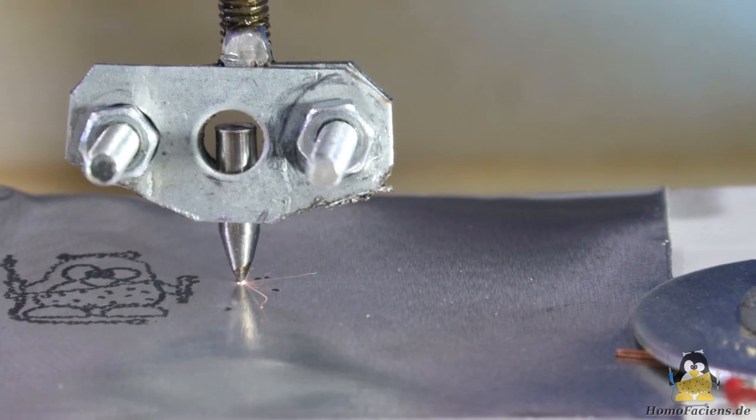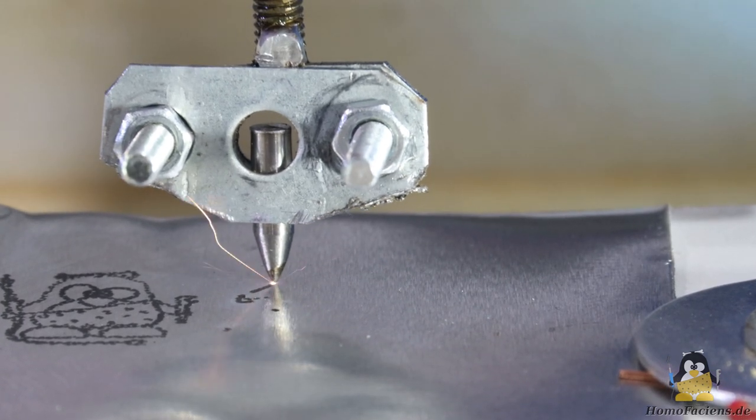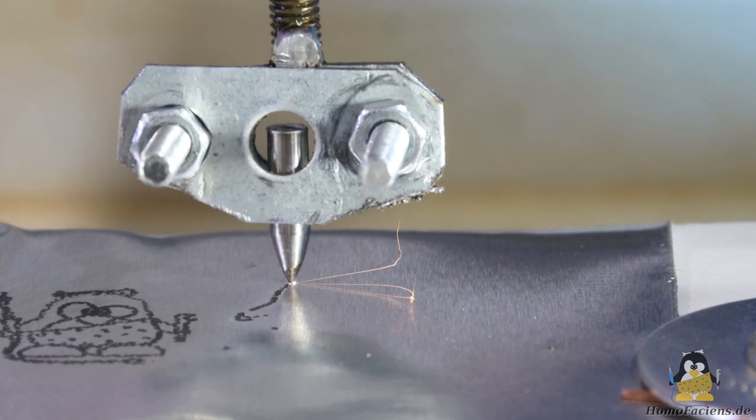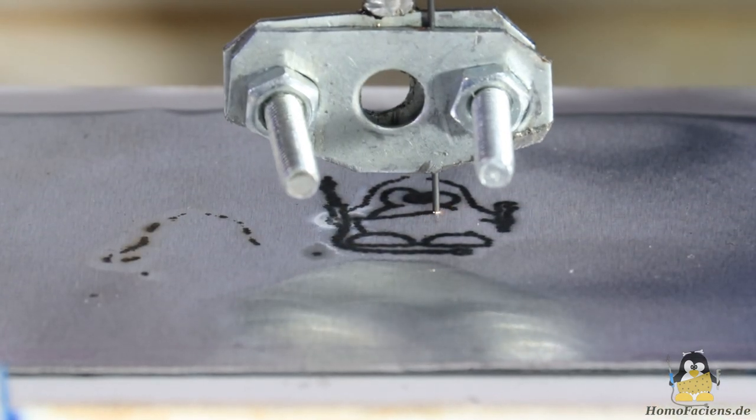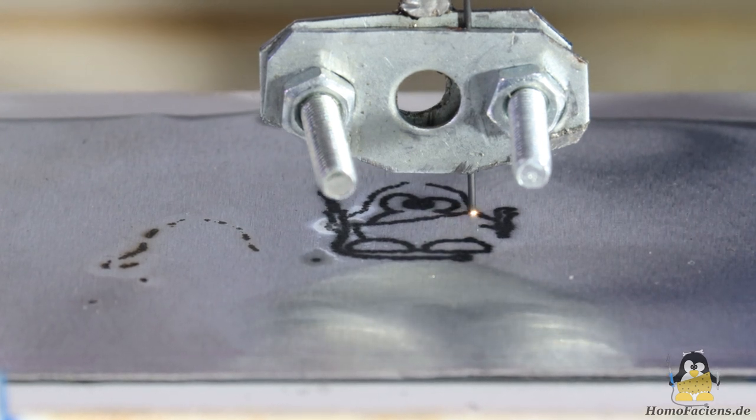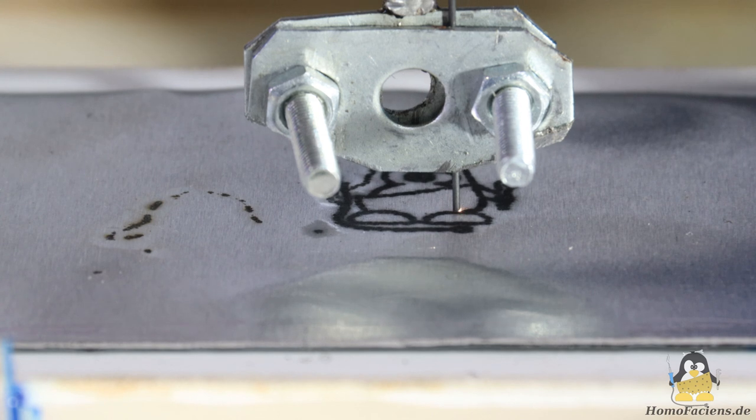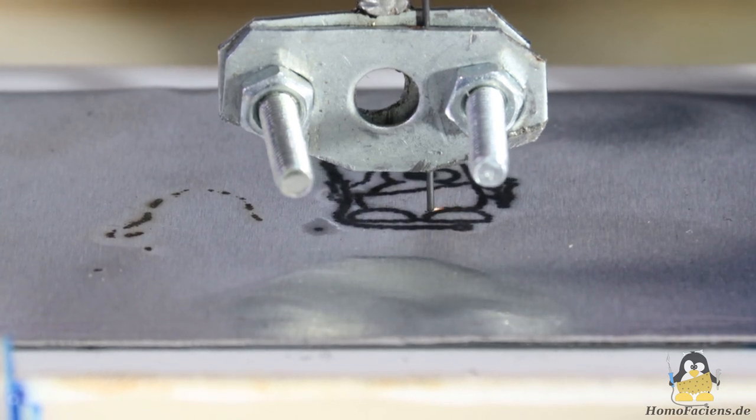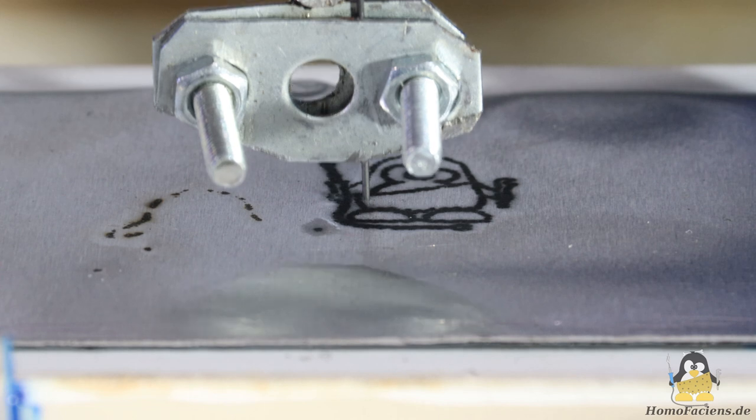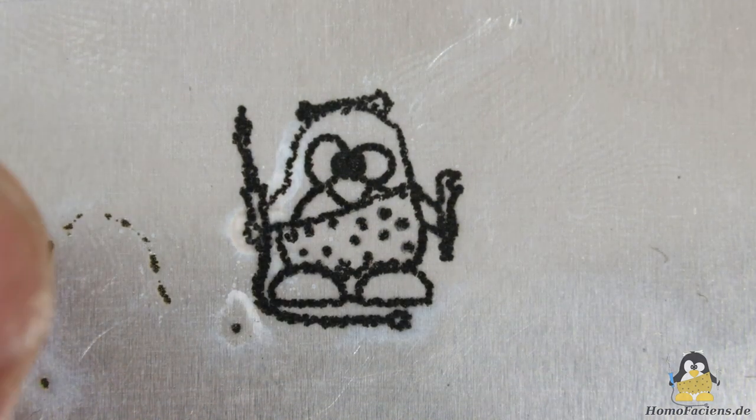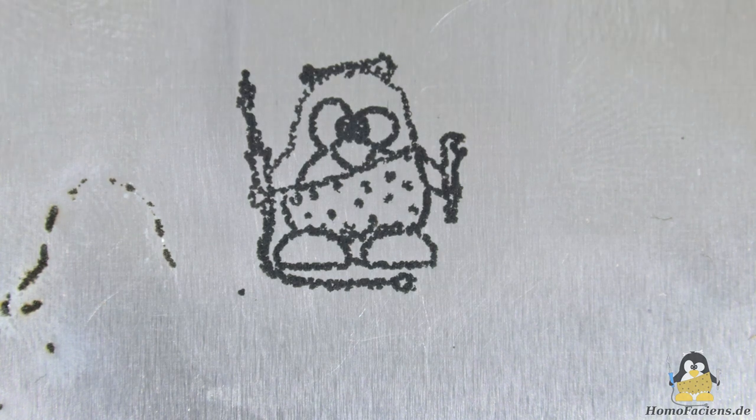That's why it doesn't work with the tungsten tip either. Graphite from a pencil works, but the result isn't exactly good.